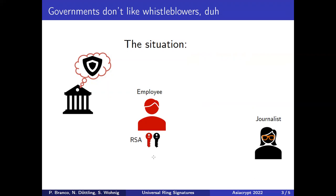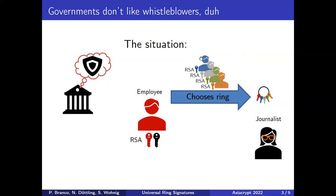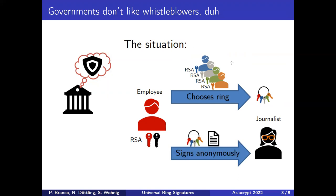We assume that the employee already has a public verification key and a private signing key, for example for an RSA signing scheme. In a first step, they will fix an anonymity ring by including the public keys of other people — for example, everybody working in their department. Then in a second step, they use a ring signature to sign anonymously and send the signature to the journalist along with the leak.